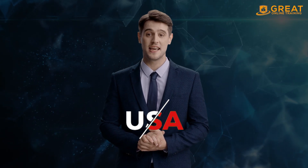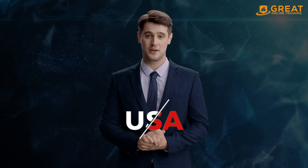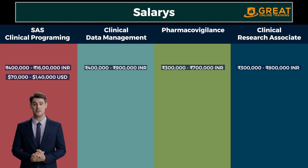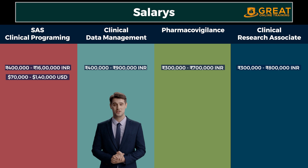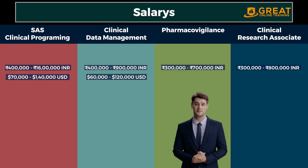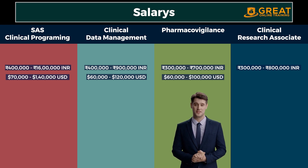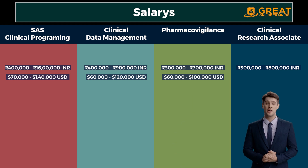Salaries in the USA, in US dollars per year: SAS Clinical Programmer: $70,000 to $140,000. Clinical Data Manager: $60,000 to $120,000. Pharmacovigilance Specialist: $60,000 to $100,000. Clinical Research Associate: $50,000 to $95,000.